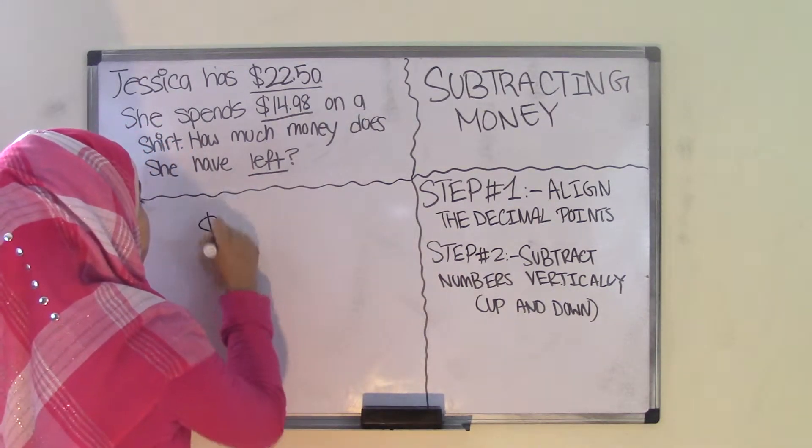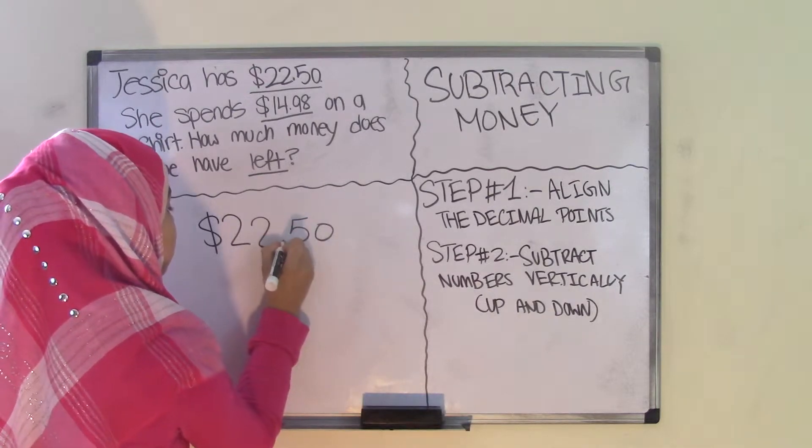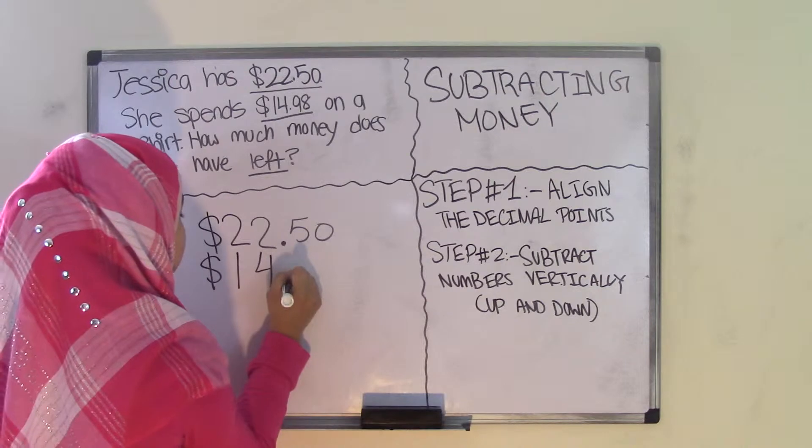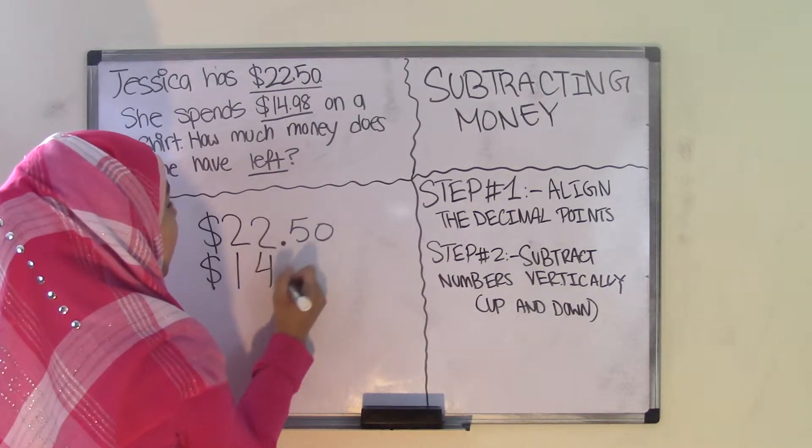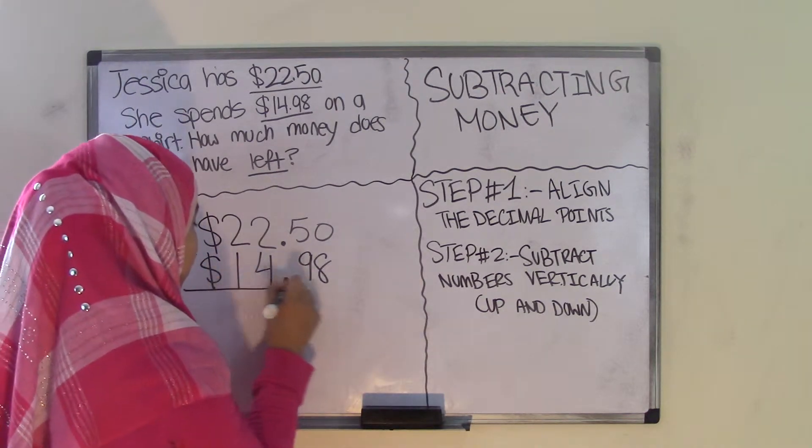Now if I write my money down, she had a total of $22.50. Here is my decimal point. Now I have to align it to the $14.98. That means the decimal points are right underneath each other. And now I'm going to write it down and put my subtraction sign.